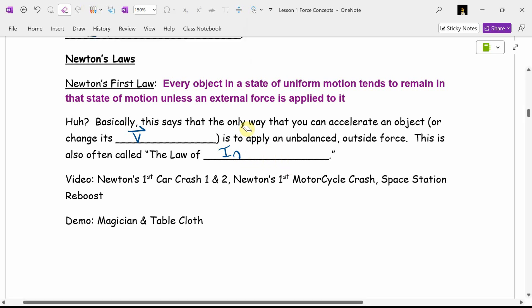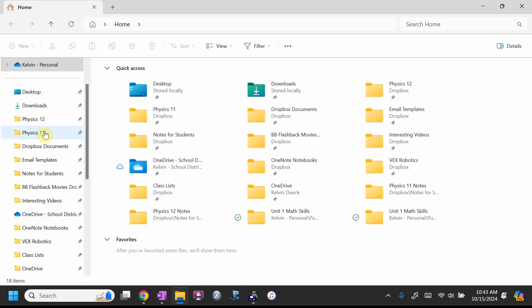If forces are balanced, A must be zero. If A isn't zero, forces can't be balanced. This law is also often called the law of inertia. It's often called the law of inertia because the more inertia an object has, the more it resists a change to its motion state. I gave you some examples last year.